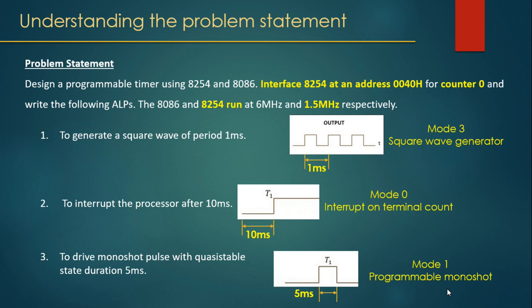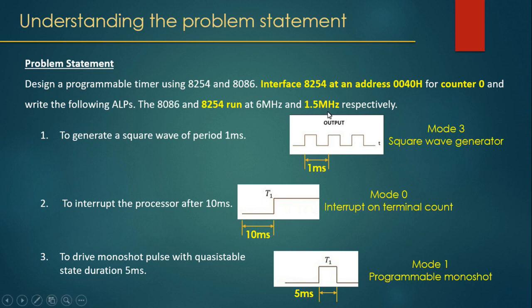Breaking down the question: we must interface 8254 and 8086. The 8254 is interfaced at address 0040H for counter 0, 0042H for counter 1, 0044H for counter 2, and 0046H for the control word register. The 8254 runs at 1.5 MHz compared to the 8086 running at 6 MHz.